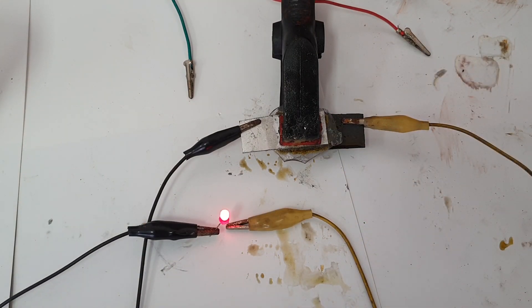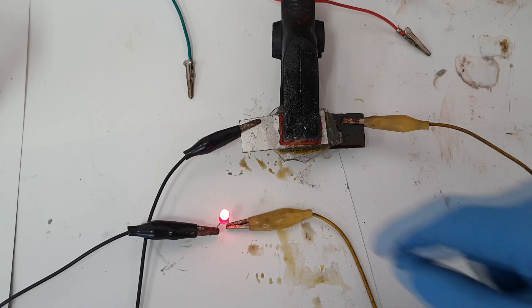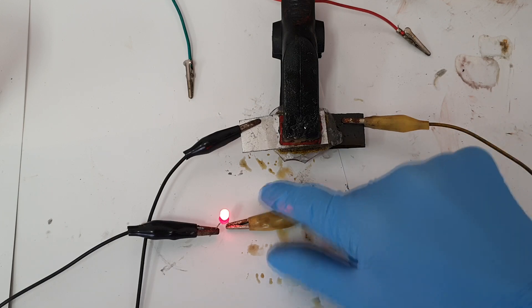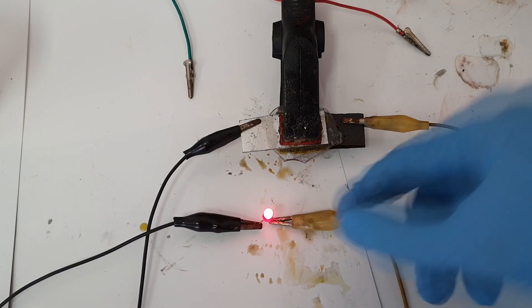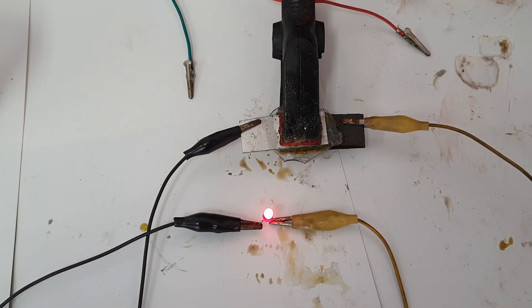So this glass separator is a little bit thick. If I reduce the thickness, I will get much more current out from this battery.